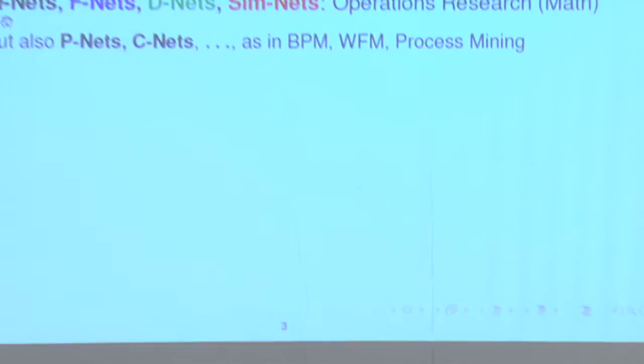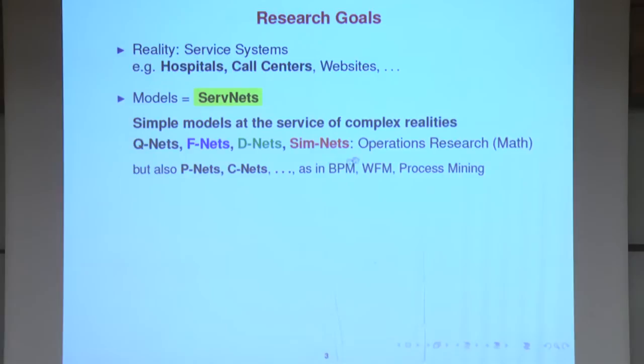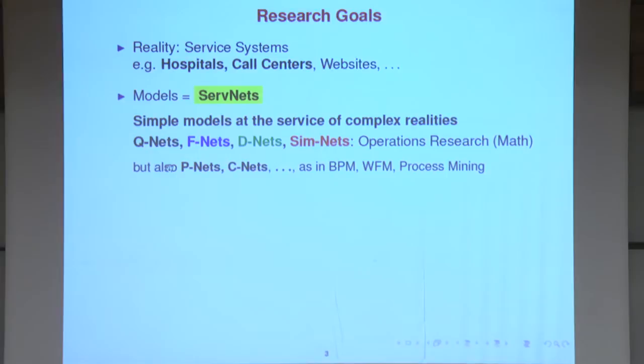These are my research goals. The reality I operate within is the reality of service systems — typically, examples are hospitals or call centers. The models I develop, let me call them in broad terms, servnets or service networks. These are mathematical models, and by necessity they are simple models of these complex realities. Some names for these models include queuing networks, fluid networks, diffusion networks, and simulation networks — all coming from the world of operations research.